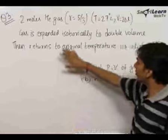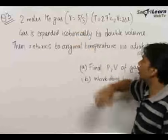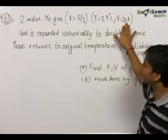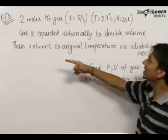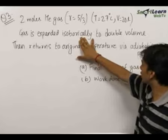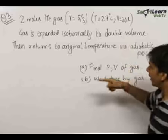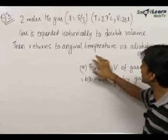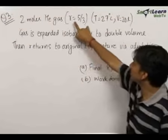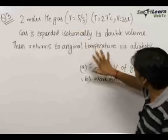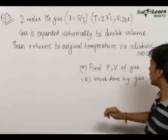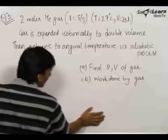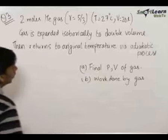The third question: we have been given 2 moles of helium gas with a gamma value of 5/3, temperature equal to 300 Kelvin, and volume equal to 20 liters initially. The gas is expanded isobarically — that is, at constant pressure — to double its volume. Then the gas undergoes an adiabatic process in which its temperature reduces back to its original value of 300 Kelvin. We need to find the final pressure and volume of the gas after this process, and the work done by the gas in the whole process.